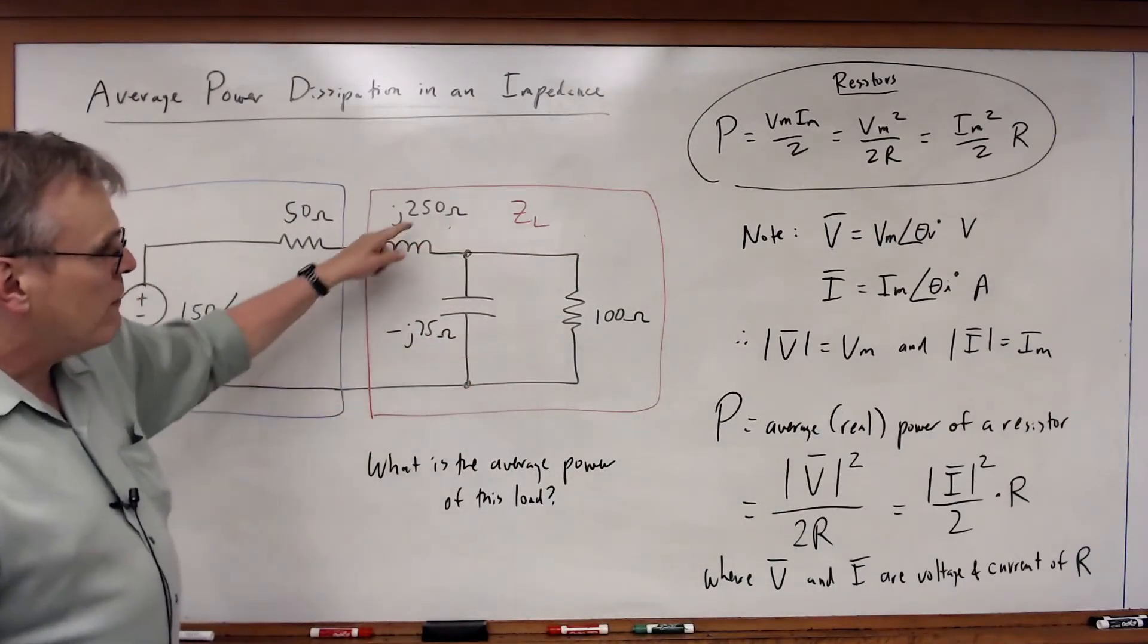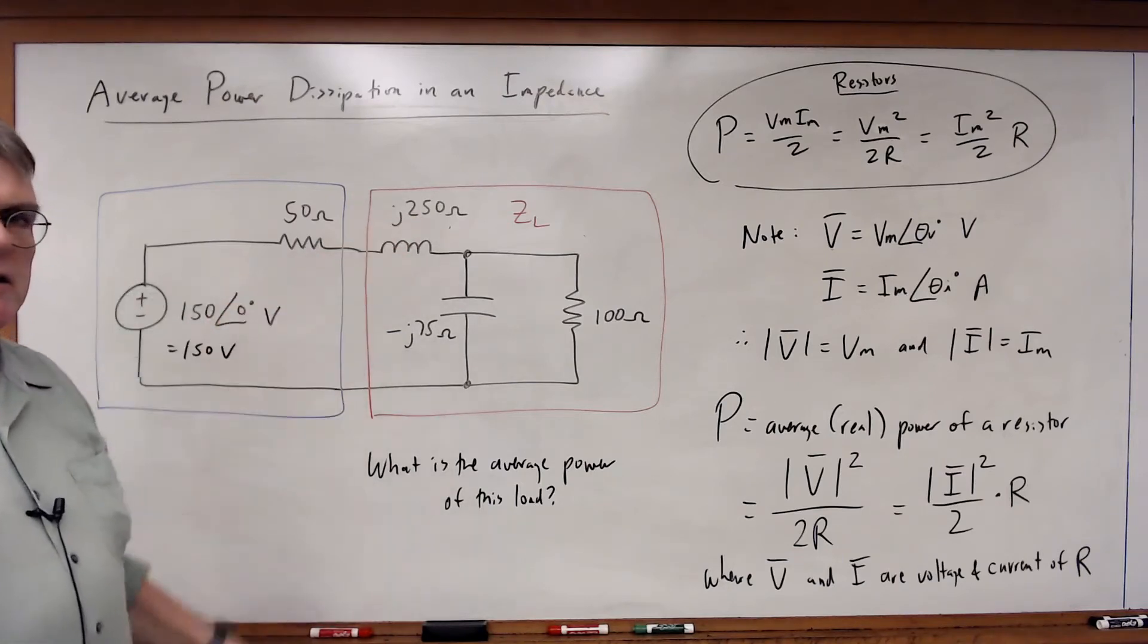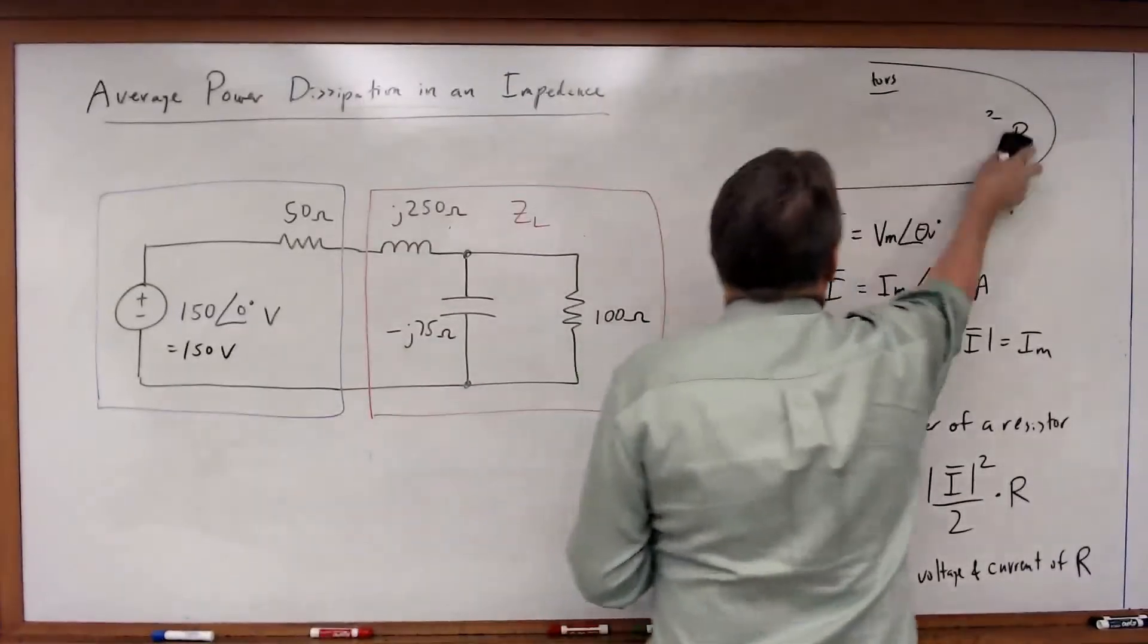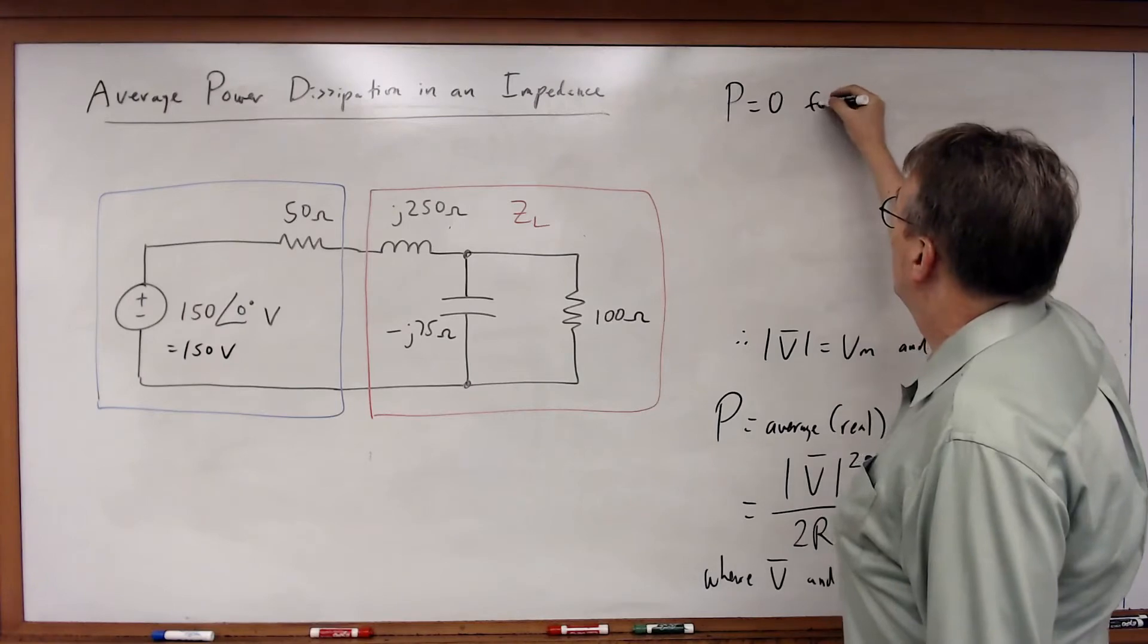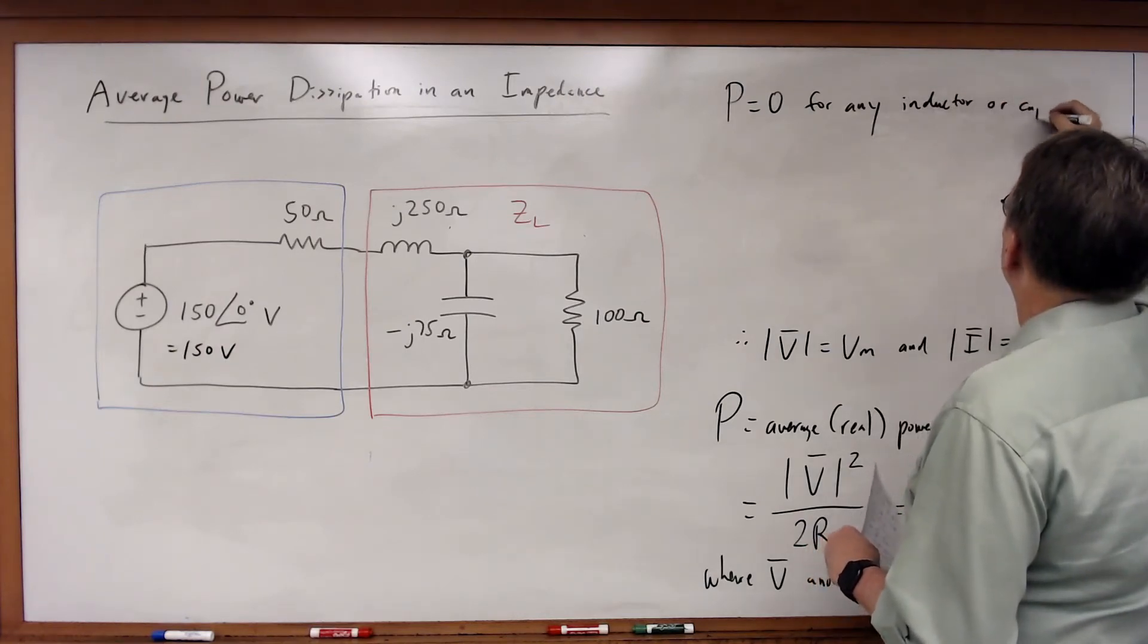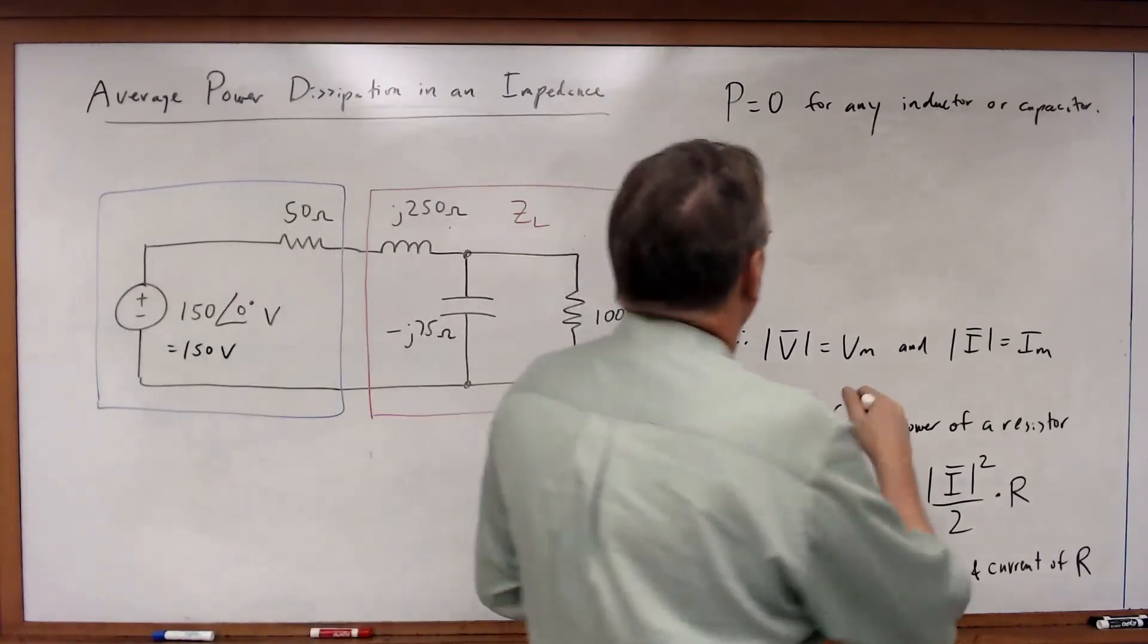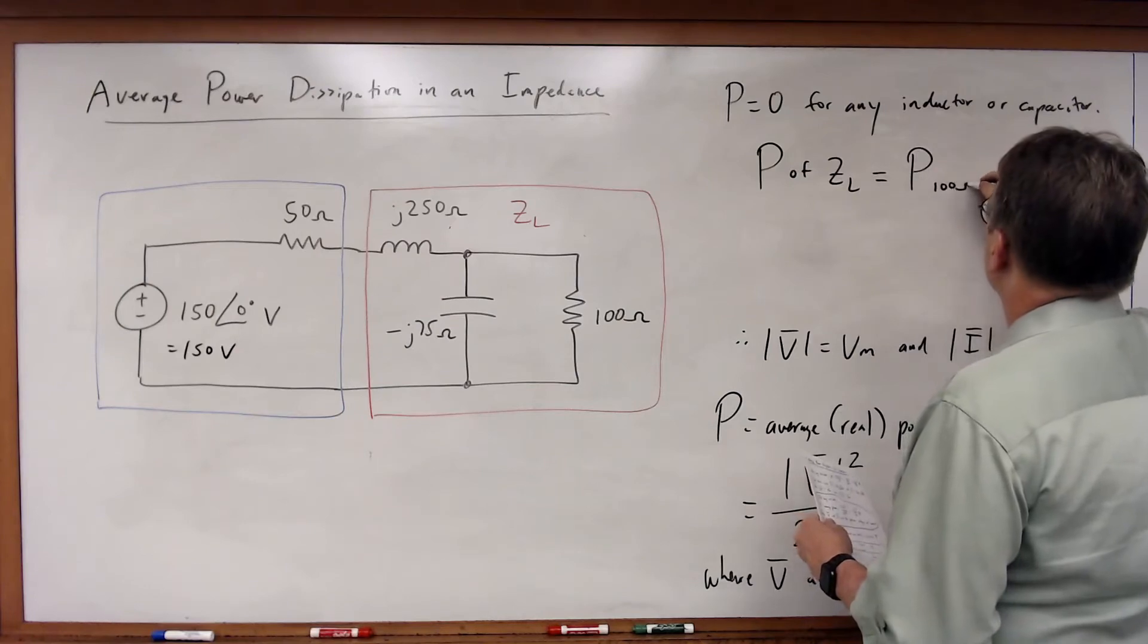I have to conclude the average power of all of the elements. But what is the average power of an inductor? Zero. What's the average power of a capacitor? Zero. By definition, we know this to be true. So we can note that P is equal to zero for any inductor or capacitor. So I only need the power of the resistor. The power of the load in this particular case must be equal to the power of the 100 ohm resistor.